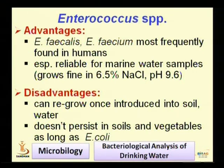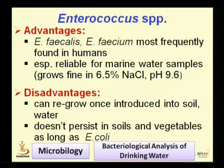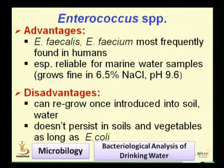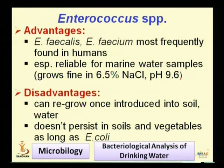What are the disadvantages of Enterococcus? These organisms can regrow once introduced into soil or water. One prerequisite condition for an indicator organism is that it should not grow or multiply in the environment — only in gut conditions, that is, in the human intestine. This makes Enterococcus not as reliable as E. coli. Second, it does not persist in soil and vegetables as long as E. coli, meaning its death rate is higher, and it will die out faster than the pathogens — a very important disadvantage.